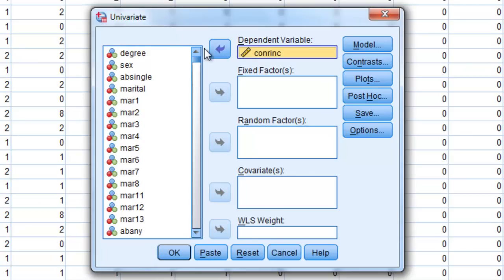And I have two independent variables, my degree and sex variables. So I've highlighted both of those. I just held down Shift to highlight both at the same time. Or you could move them over one at a time. And I will move them to the Fixed Factors box.